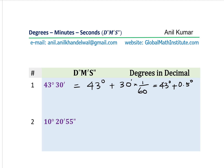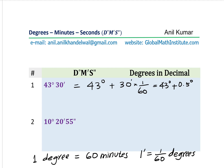As we know, 1 degree equals 60 minutes, so the reverse is that 1 minute equals 1/60 of a degree. In doing so, the minutes cancel and we get 0.5 degrees. The final answer is 43.5 degrees — we have successfully converted degrees and minutes to degrees in decimal form.